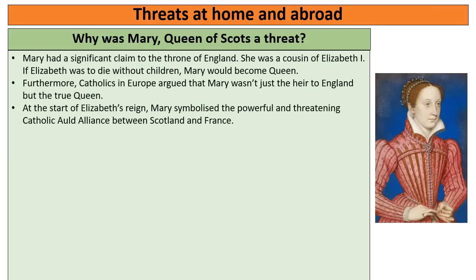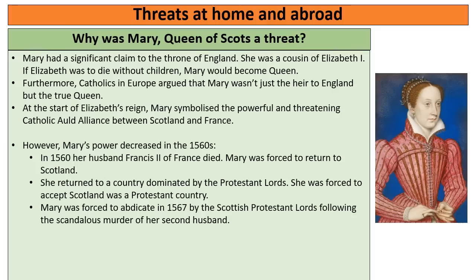Fortunately for Elizabeth, Mary's power starts to decline in the 1560s. Mary's husband, the King of France Francis II, dies of illness, and Mary has to return to Scotland. In her absence, Scotland has become a Protestant country dominated by Protestant lords. She is forced to accept that Scotland is Protestant and is very unpopular there as a Catholic Queen. In fact, she's forced to abdicate — to give up the throne of Scotland in 1567 by the Scottish Protestant lords, partly because of her religion but also because of the scandalous murder of her second husband, which many people believe Mary herself was involved with.